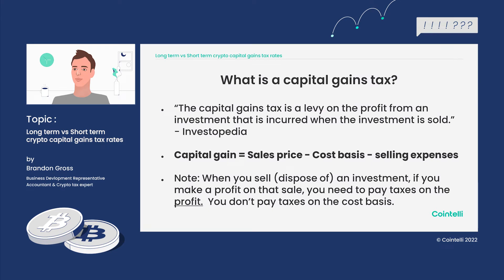What exactly is capital gains tax? According to Investopedia, the capital gains tax is a levy on the profit from an investment that is incurred when the investment is sold. In other words, you invest in a property, stock, or something, you hold it, and then when you sell it and make money off of that, you need to pay taxes on that profit.